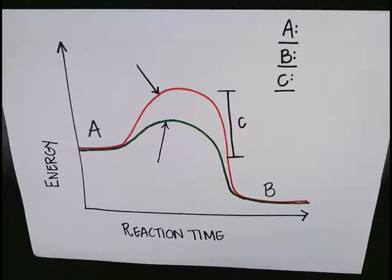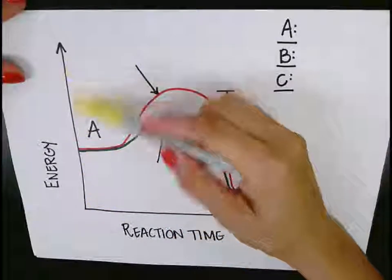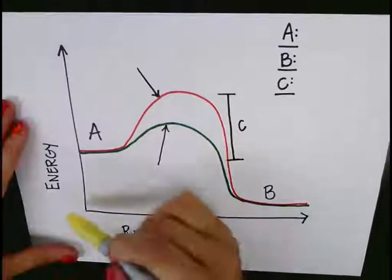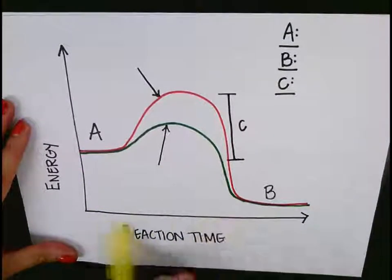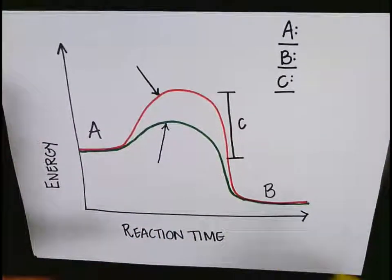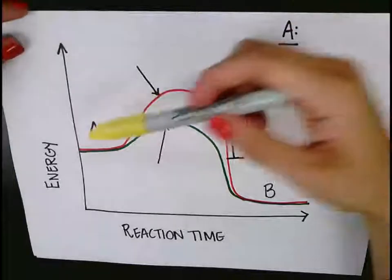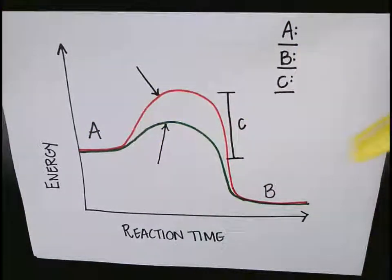So this is what an enzyme graph or a chemical reaction graph typically looks like. A few things to point out. On the y-axis we've got energy or the amount of energy. On the x-axis we have reaction time. So the first thing we're going to do is go ahead and identify what each of these letters represents on the graph.